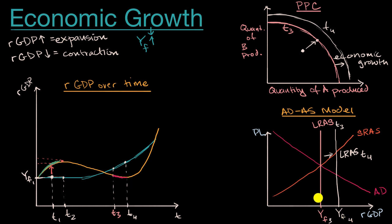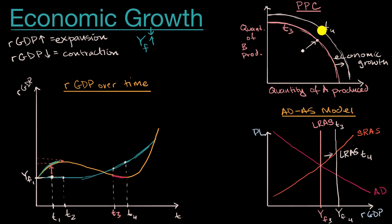The big takeaway here is: regardless of where we are in the expansion or contraction of our business cycles, economic growth is the change in that blue line. If we're looking at the PPC, it's a shift out of our production possibilities curve. If we're looking at the aggregate demand/aggregate supply model, it is a shift to the right of our long run aggregate supply curve.